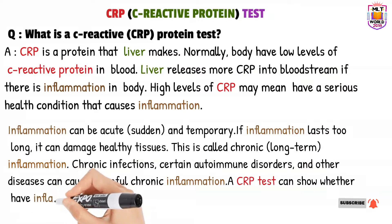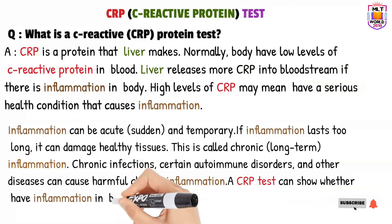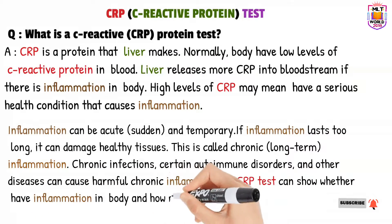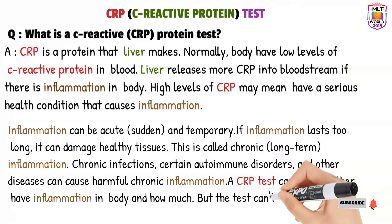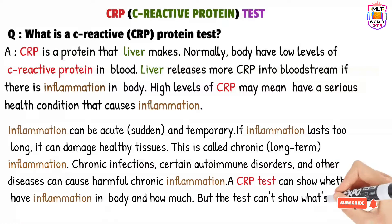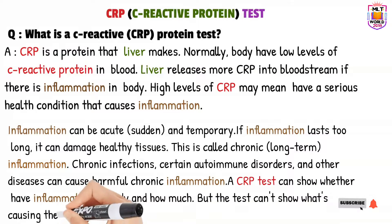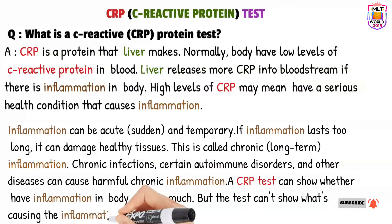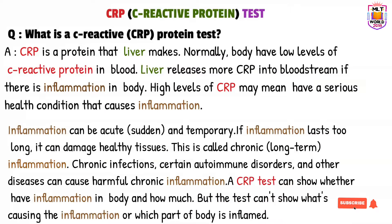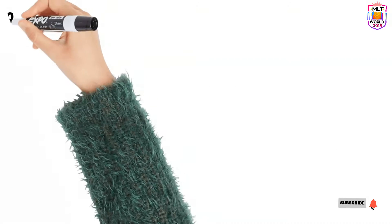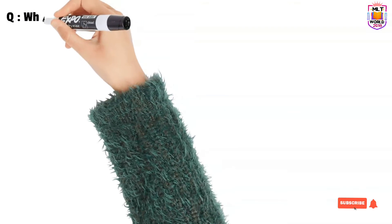The CRP test will show whether there is inflammation in the body and, if so, the level of inflammation. However, it will not tell us the location of the inflammation in the body.